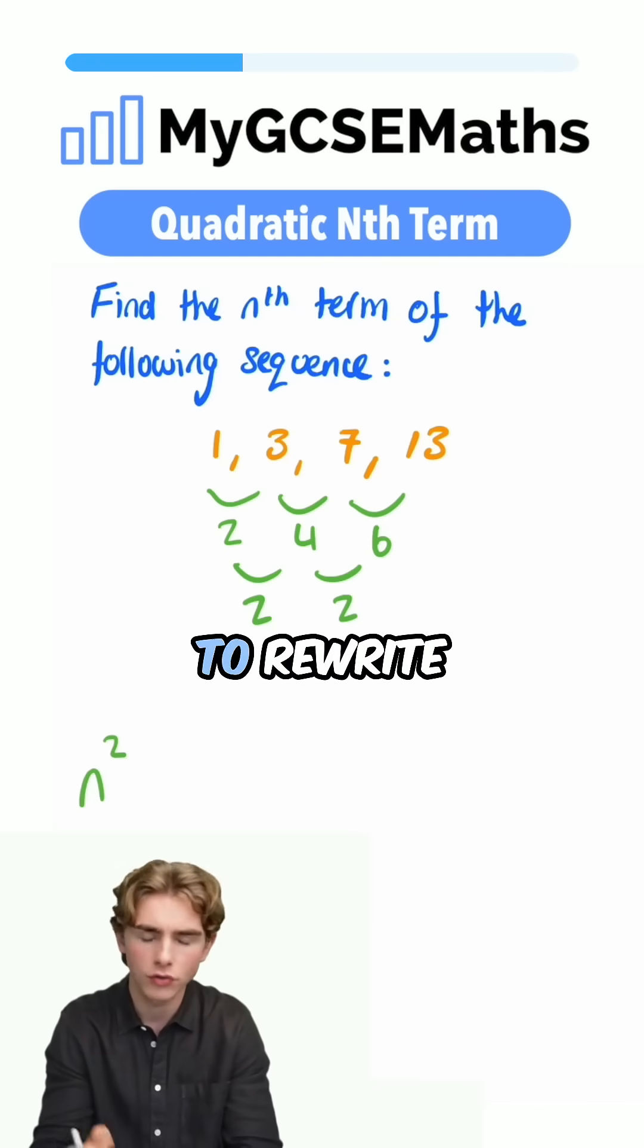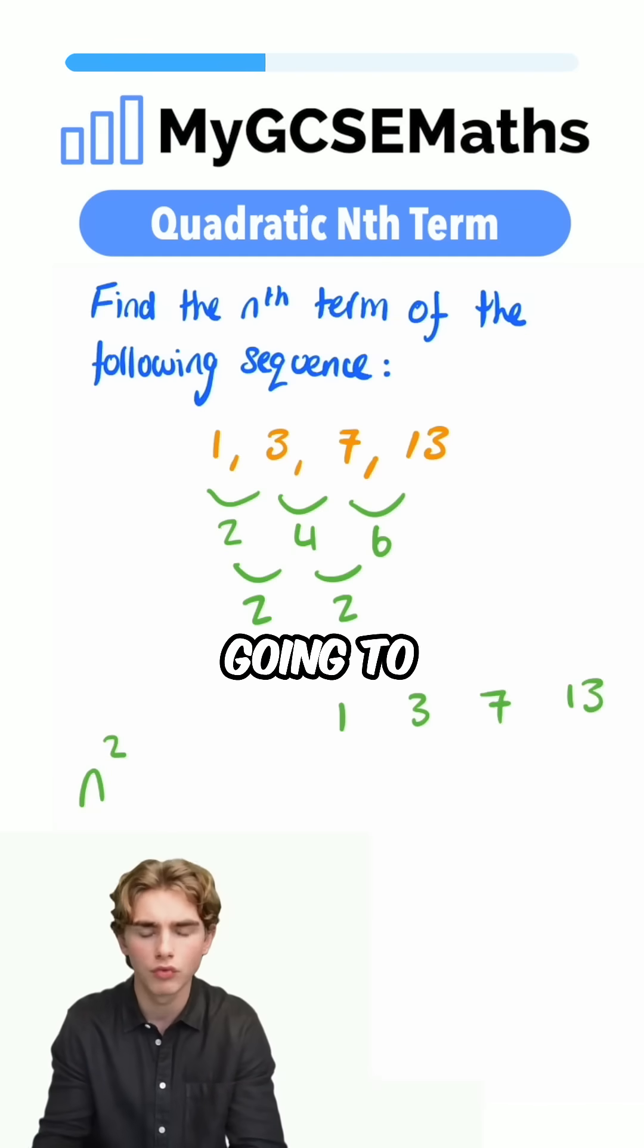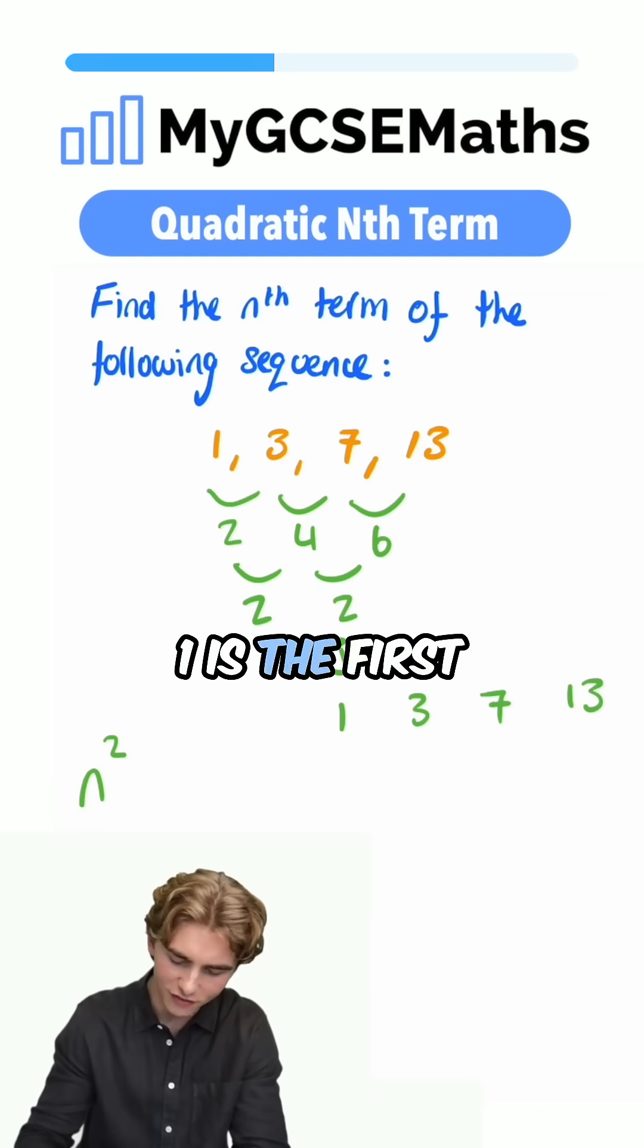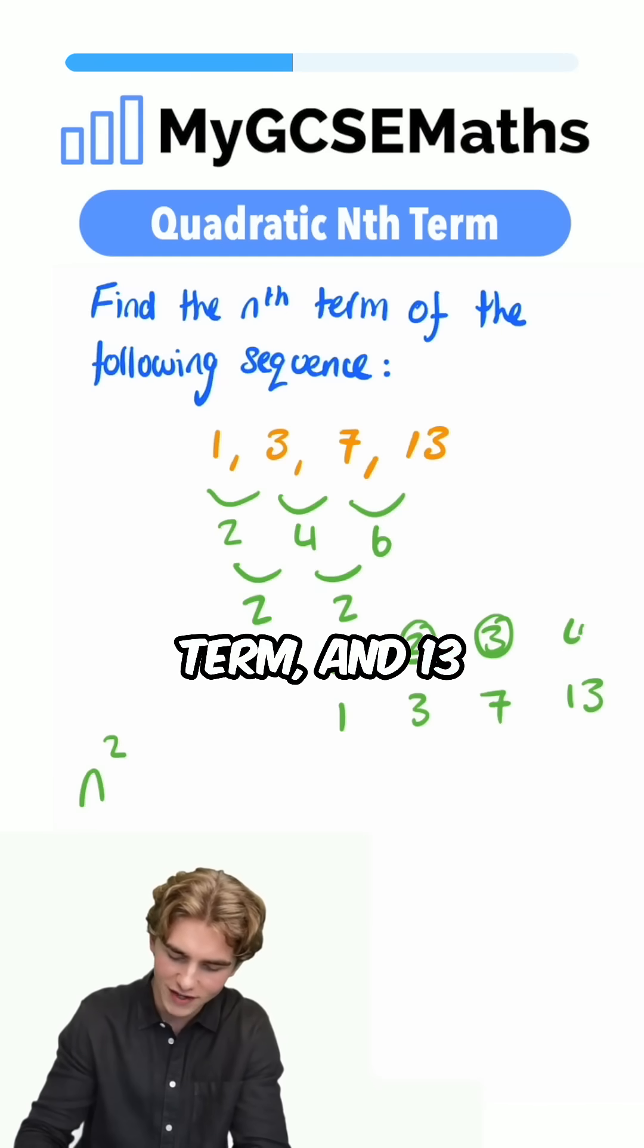Now, what next? We're going to rewrite our sequence. We have 1, 3, 7, 13, and we're also going to write our term numbers. 1 is the first term, 3 is the second term, 7 is the third term, and 13 is the fourth term.